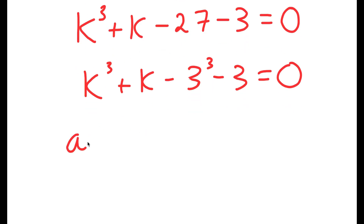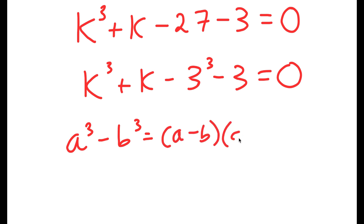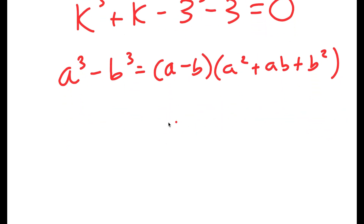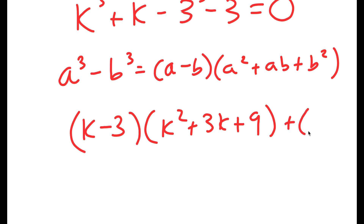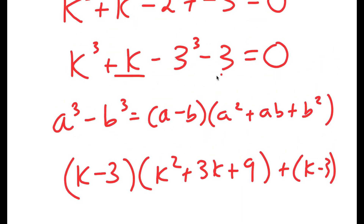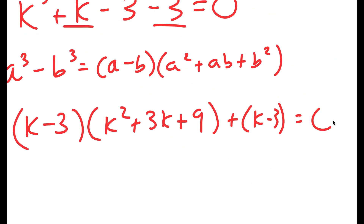Now if I have something in the form a to the power of 3 minus b to the power of 3, this is equal to a minus b times a squared plus ab plus b squared. So this is equal to k minus 3 times k squared plus 3k plus 3 squared, which is 9. And we can't forget our plus k minus 3 at the end, which is equal to 0.